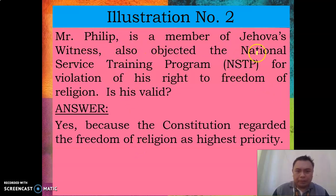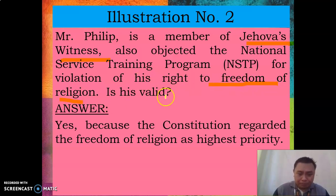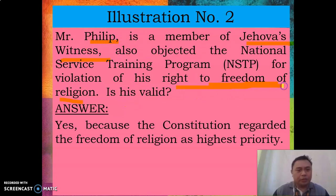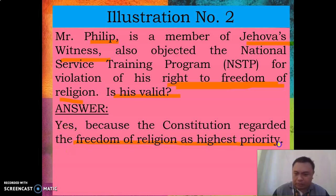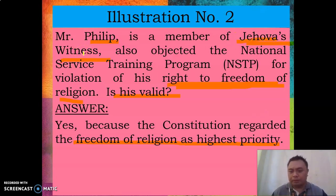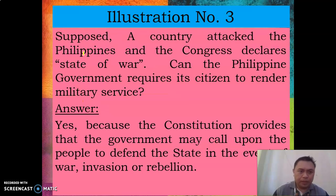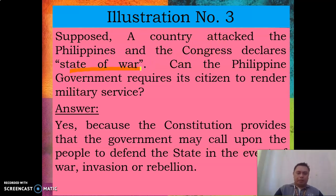Another case: Mr. Phillip is a member of Jehovah's Witness. He objected to NSTP training for violation of his right to freedom of religion. Is his claim valid? The answer is yes, because the Constitution regards freedom of religion as the highest priority. Therefore, a Jehovah's Witness may be excused from attending the NSTP program.